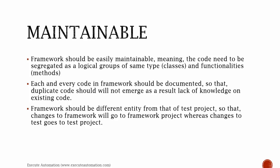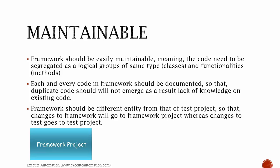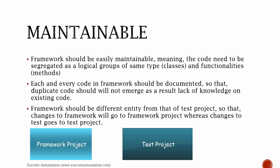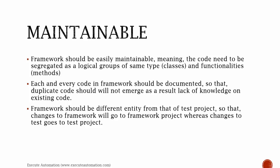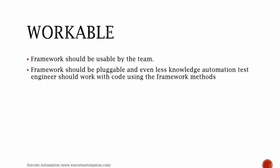The framework should be a different entity from the test project, so that changes to the framework go to the framework's project whereas changes to the tests go to the test project. While developing a framework, keep the framework project as a separate project, and the test project — where you write the test scripts for your application — as a separate project. Since your application can keep changing, the framework is a generic entity that can be used across multiple projects.